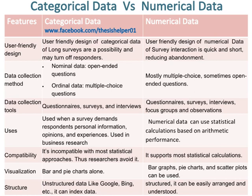Categorical data is used when a survey demands respondents' personal information, opinions, and experiences, and is used in business research, whereas numerical data can use statistical calculations based on arithmetic performance.